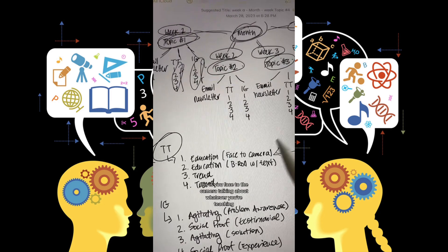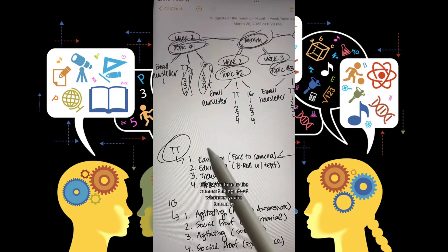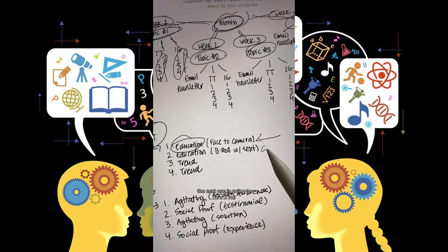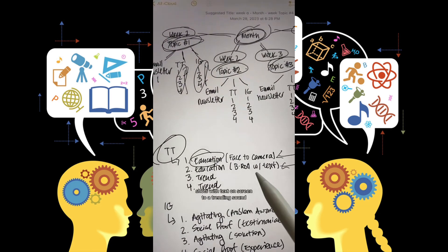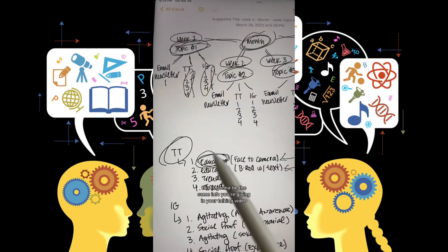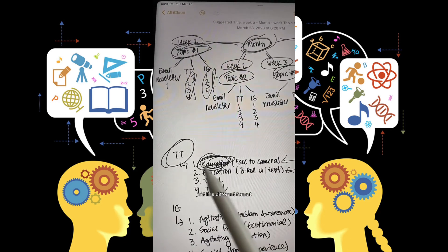This is you, face-to-the-camera, talking about whatever you're teaching. The next one is going to be B-roll shots with text on screen to a trending sound. This is going to be the same info you're giving in your talking video, just in a different format.